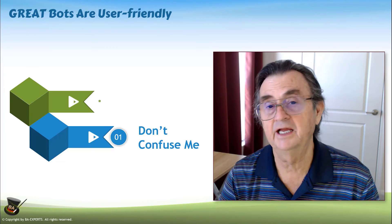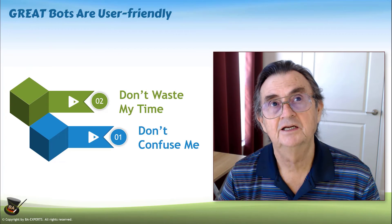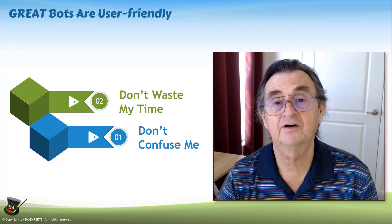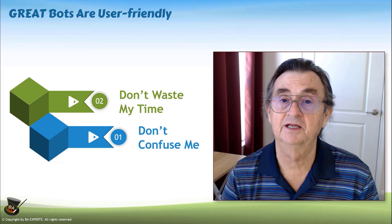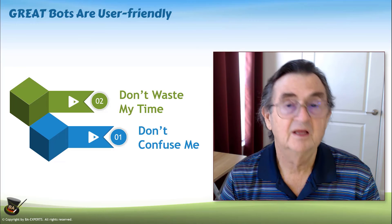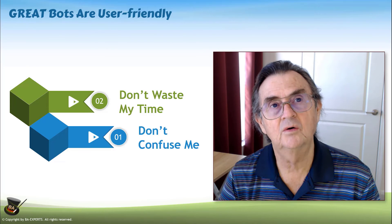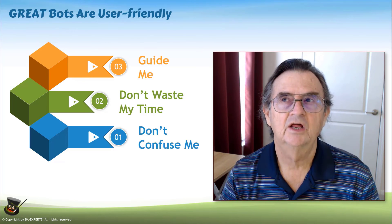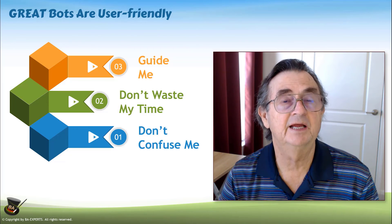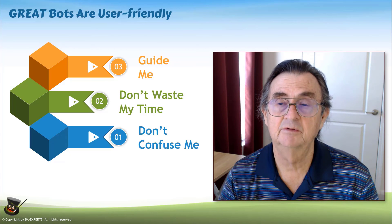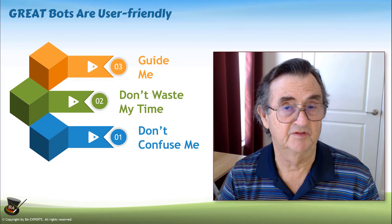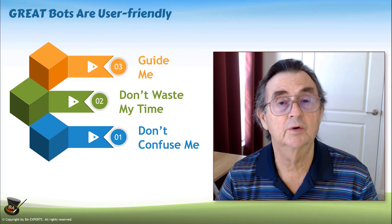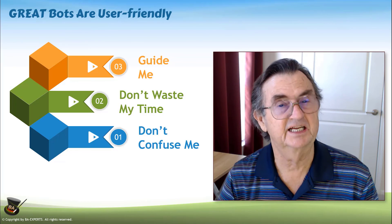Another thing users absolutely hate is wasting their time. If the user feels the bot is not going to get them where they need to go as quickly as possible, they're going to start looking for a way to talk to a human being. If they can't find that quickly, they're off your site — they'll go to a competitor. Finally, visitors don't know a whole lot about your website, so they need help. They need you to guide them to where they need to go. The questions and options you offer in the bot have to make sense to the user and their situation, and as you guide them toward the offer that fits their needs, they need to know where things are going and be able to follow along.